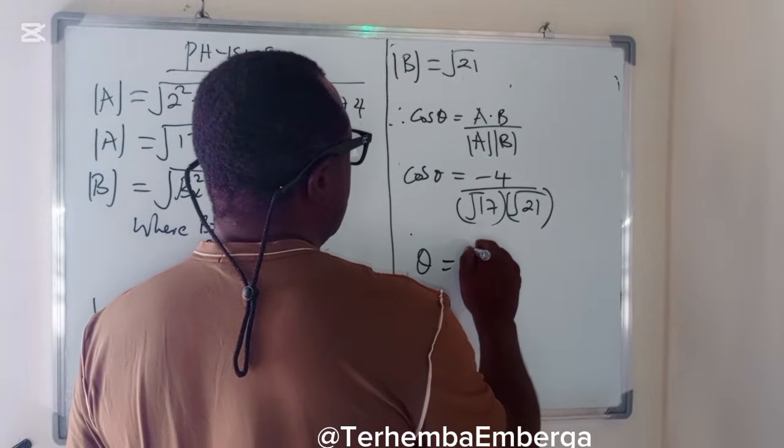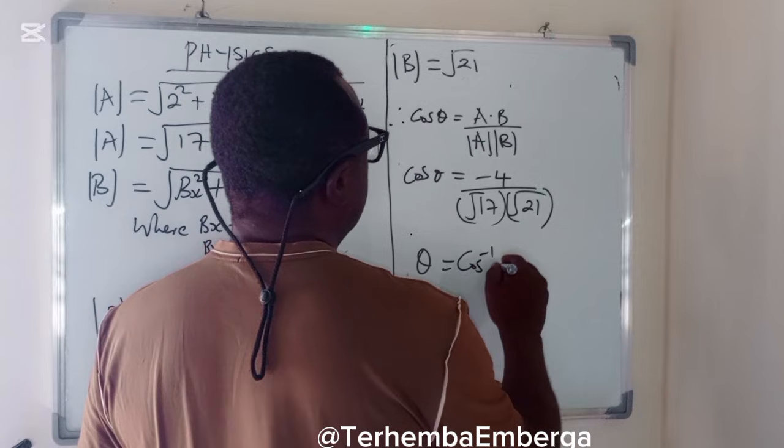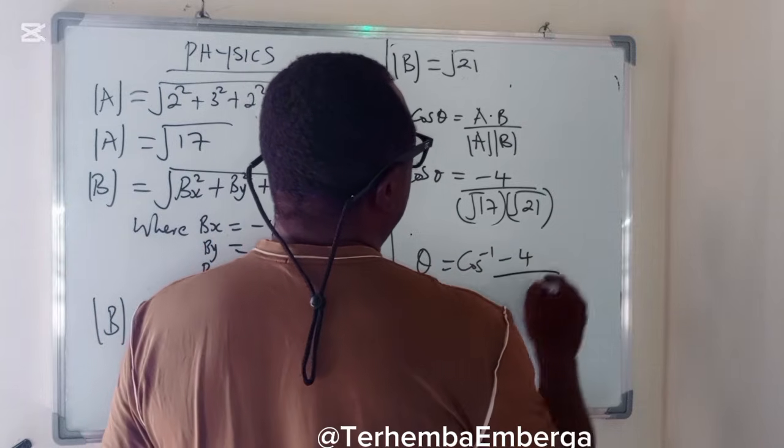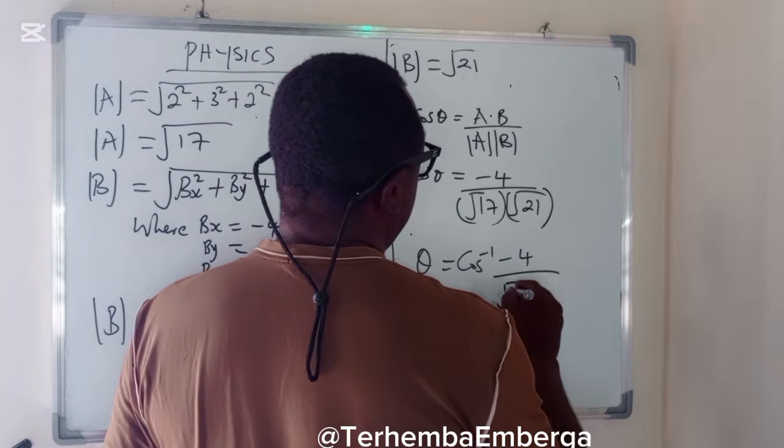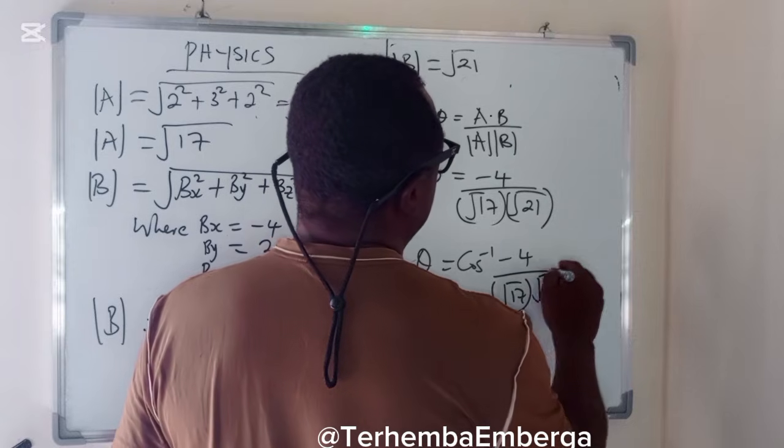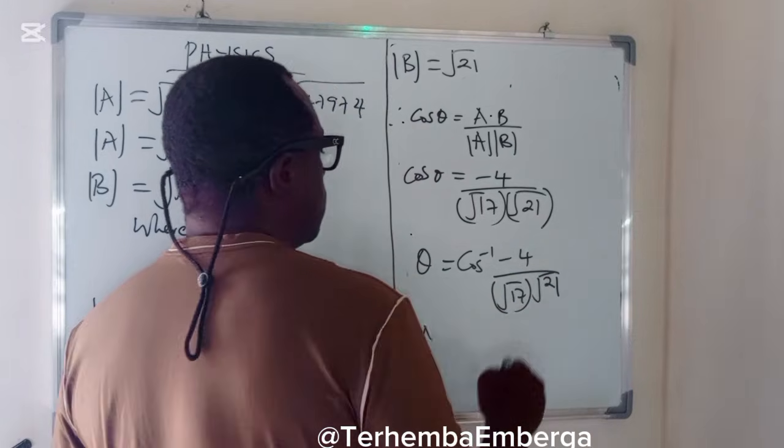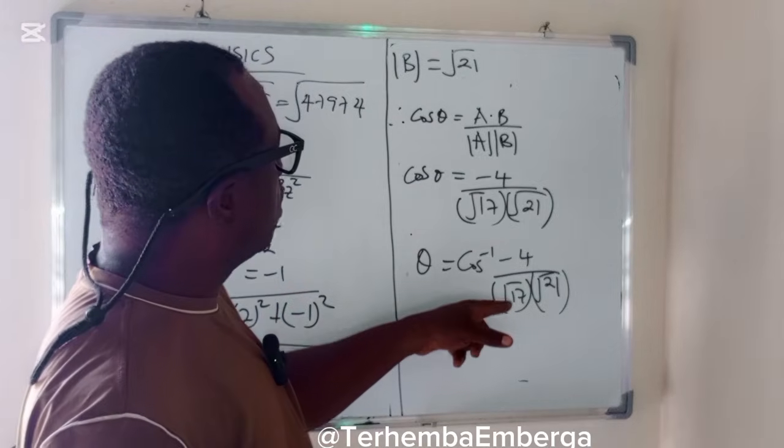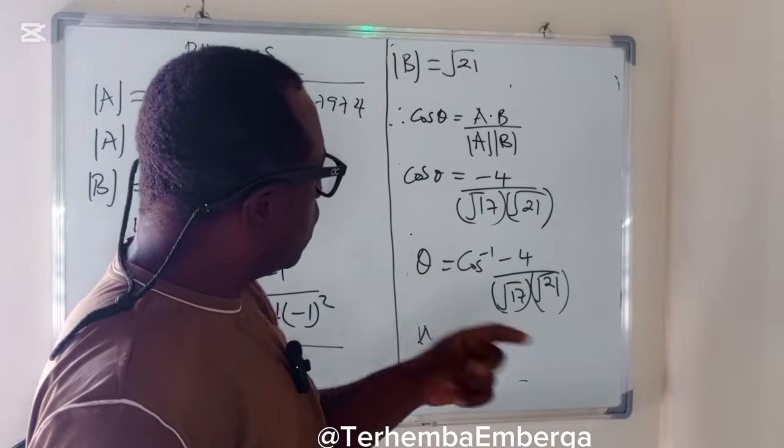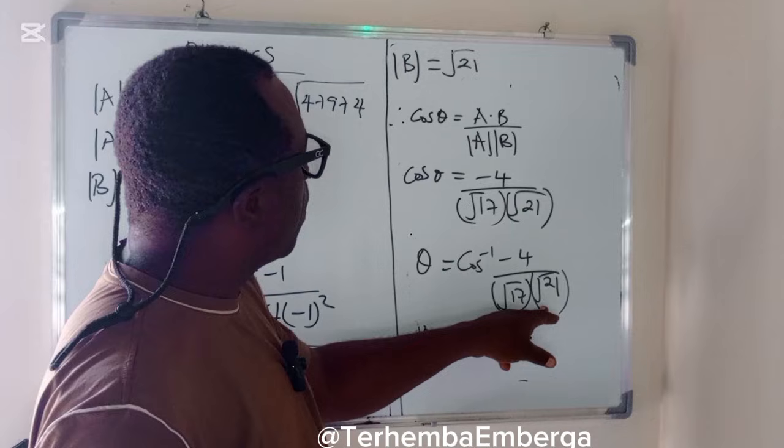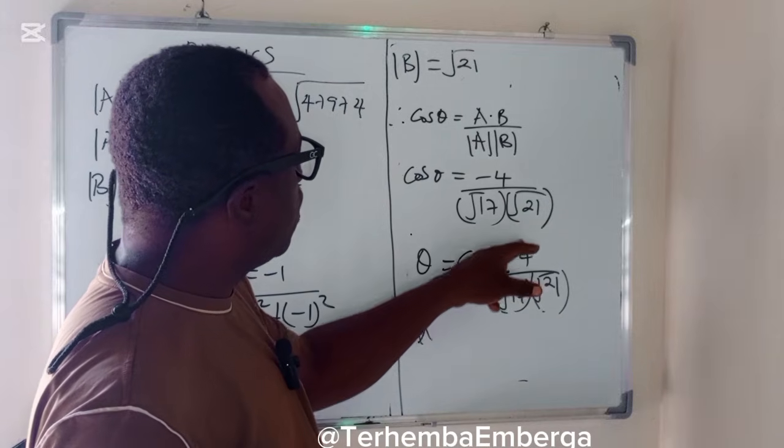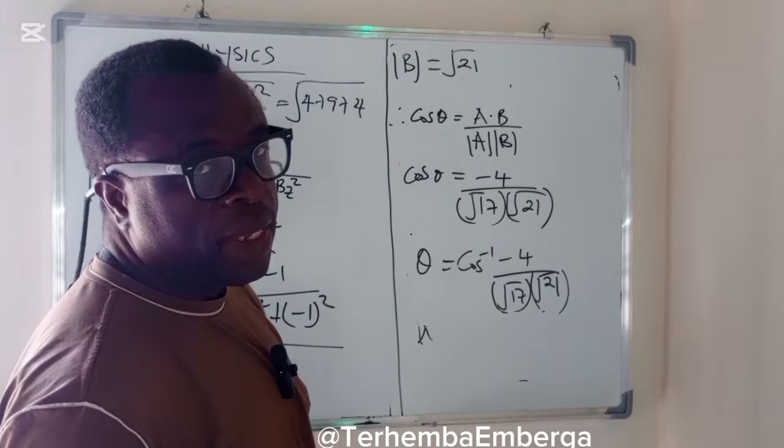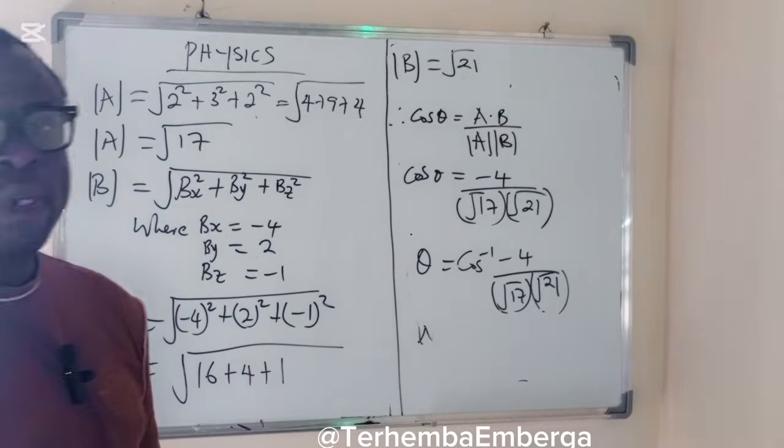So θ will be equal to cos inverse of minus 4 all over square root of 17, square root of 21. So you can evaluate this. Find the square root of 17, find the square root of 21, multiply, divide by 4, and you get the angle in degrees.